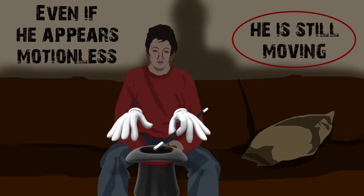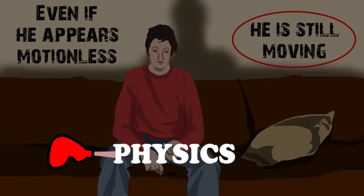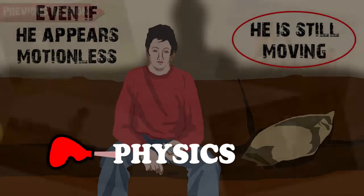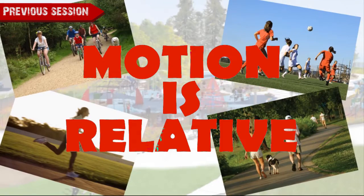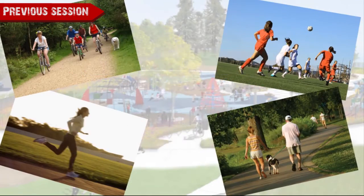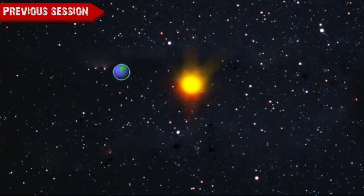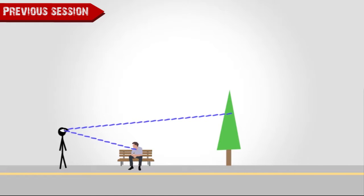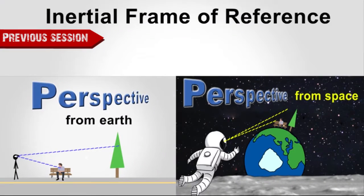Friends, Ben's no magician. All what's happening is just plain physics. As mentioned in our first session, motion is relative. Whether he likes it or not, Ben is continuously moving as the earth is in motion. But he appears to us to be stationary because he and we are in the same inertial frame of reference.